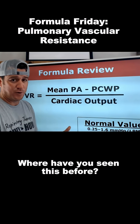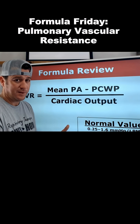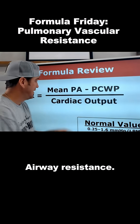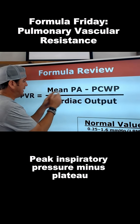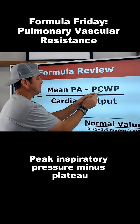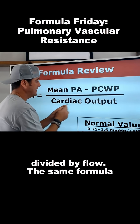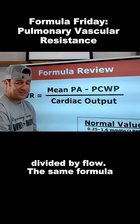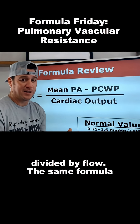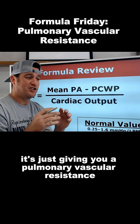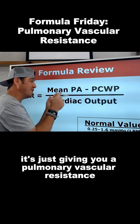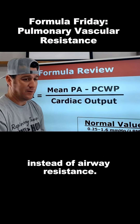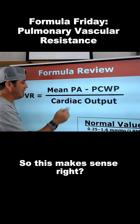Where have you seen this before? That's right — airway resistance: peak inspiratory pressure minus plateau pressure, divided by flow. The same formula is just giving you pulmonary vascular resistance instead of airway resistance. So this makes sense, right?